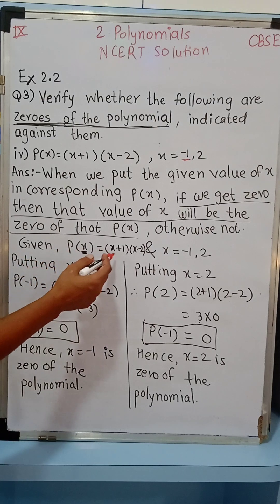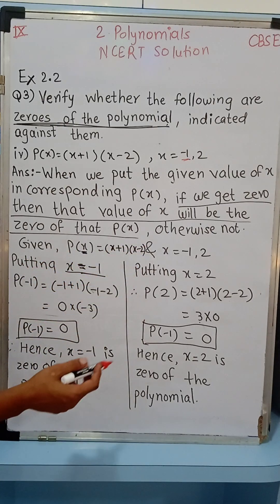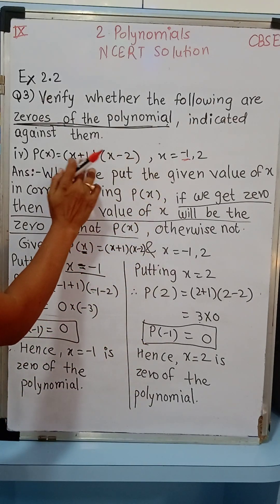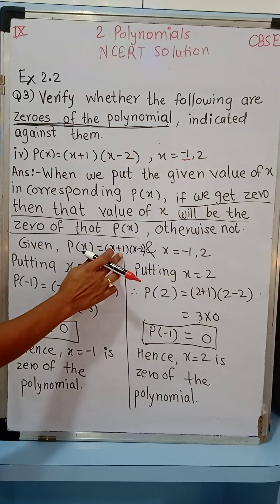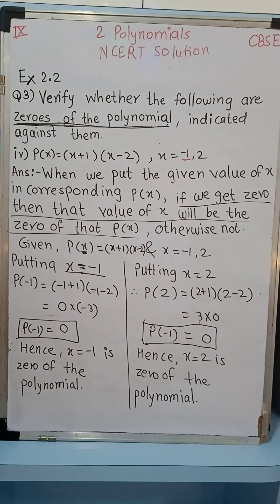Given P(x) = (x+1)(x-2). Now we can see that here plus 1 minus 1 will get cancelled, plus 2 minus 2 will get cancelled. So we will not solve it, we will put the values directly.